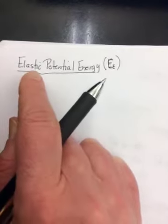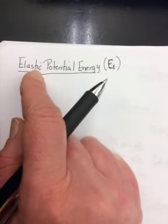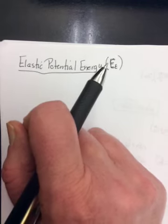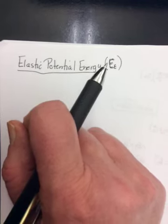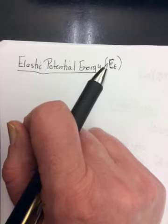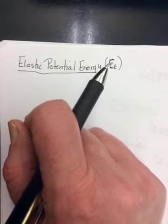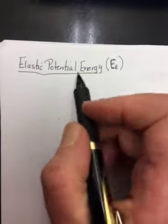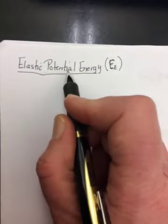So now we're going to look at energy stored in things that will stretch and compress. Usually these things are springs, but they could also be an elastic band. It could be your favorite pair of spandex, running shorts, or yoga pants, or whatever they might be. Anything that can stretch will have elastic potential energy in it.